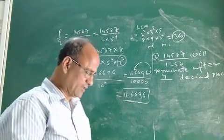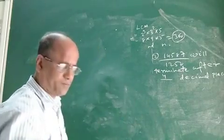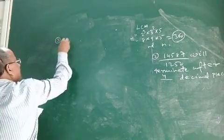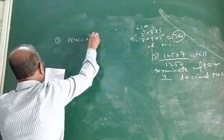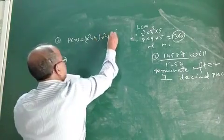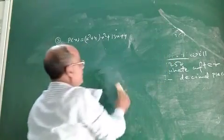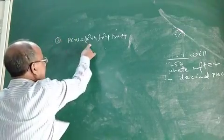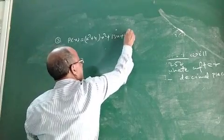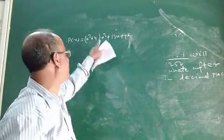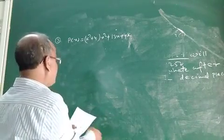Now let me discuss another question. This is a question on the chapter Polynomials. Suppose you are given a quadratic polynomial P of X, and you are also given the two zeros of this polynomial.